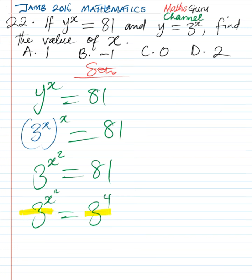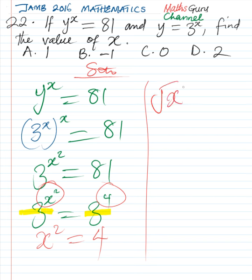So we are going to compare the powers. We have x squared equal to 4. To get the value of x now, we find the square root of both sides. We're going to have square root of x squared equal to the square root of 4. Square root can cancel the square to be left with x equal to 2. Therefore the correct option is d.